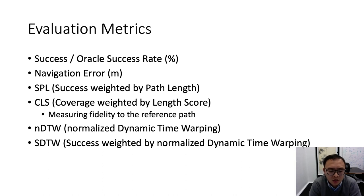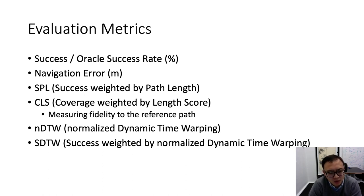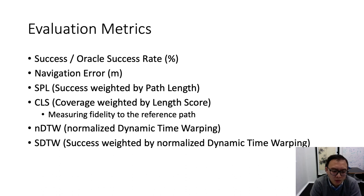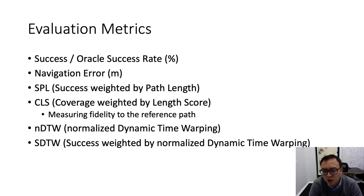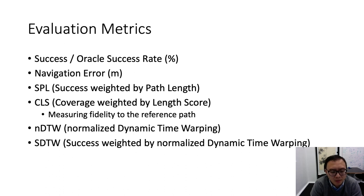For example, if 50% of test episodes are successful and the agent takes the optimal path, SPL is 0.5, the same as the success rate. But if all test episodes are successful but agents take twice as long as optimal, SPL is also 0.5. The CLS is coverage weighted by the length score — a product of path coverage and length score with respect to the reference path, measuring how closely an agent's trajectory conforms to the entire reference path rather than just goal completion. Dynamic time warping (DTW), long used in speech processing, is computed by aligning elements of a reference and query series while preserving order — ideal for VLN evaluation. NDTW is normalized dynamic time warping, and SDTW is success weighted by normalized dynamic time warping.